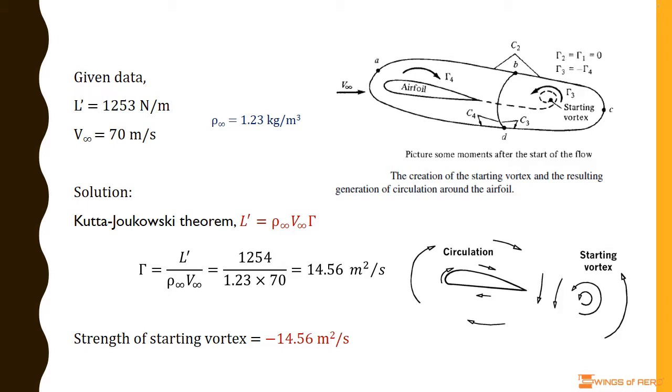From this, we can write the circulation associated with the flow over the airfoil. Then, Γ equals L' divided by ρ∞ times V∞, where we know the values of L' and V∞.